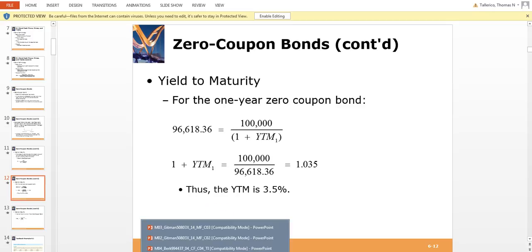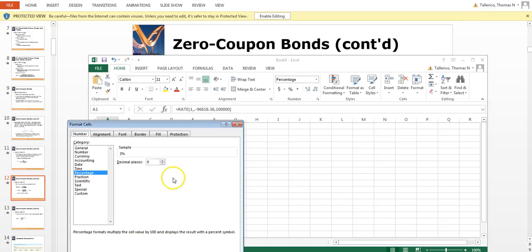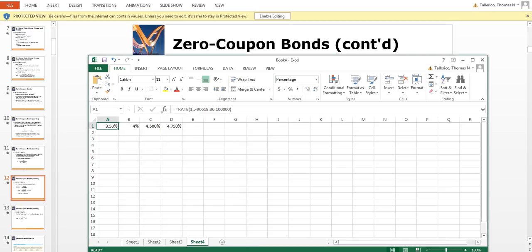So if I go to Excel, you can see I did that right over here. Let me open up these cells a little bit and give you some more decimals. There you go, so you can see that's three and a half percent.